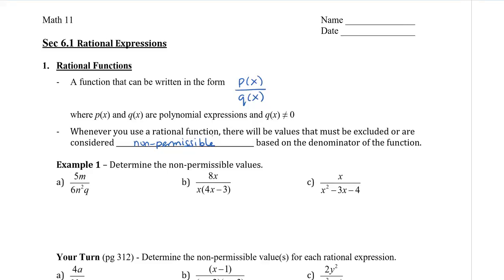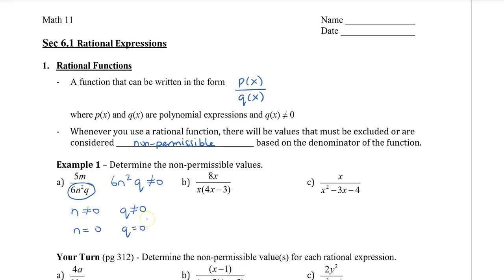Let's look at some examples to find the non-permissible values. In the first one, the denominator is 6n² times q. Since the denominator can't equal 0 and we have two variables, we look at each variable separately. Since they're being multiplied, n can't equal 0 and q can't equal 0. So the non-permissible values are n equals 0 and q equals 0.